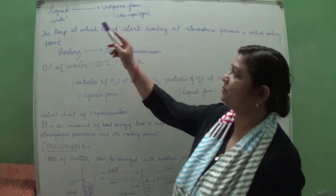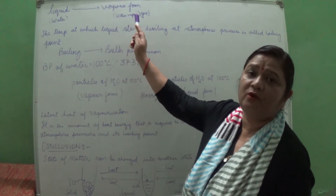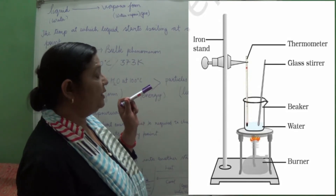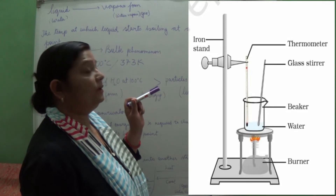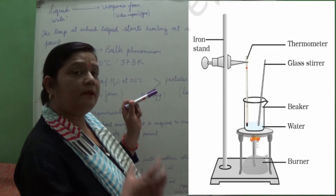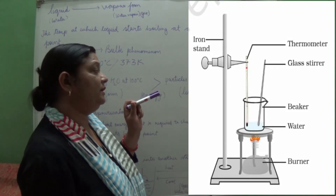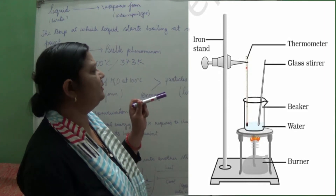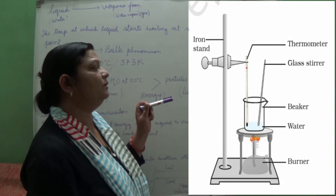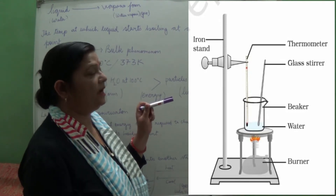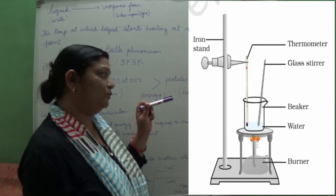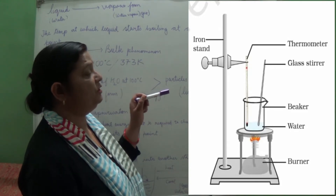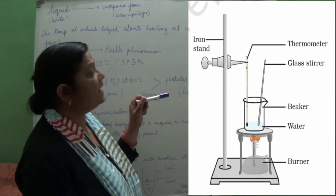Now we will see the experiment in which water in liquid form is changed into its gaseous or vapor form. Again we take a beaker, burner, thermometer, and stirrer. In the beaker we take water in liquid form and we heat it. After heating, we see vapors coming out of the beaker, but the temperature on the thermometer is again not changing. The energy is being consumed to convert the liquid form of water into the gaseous form.